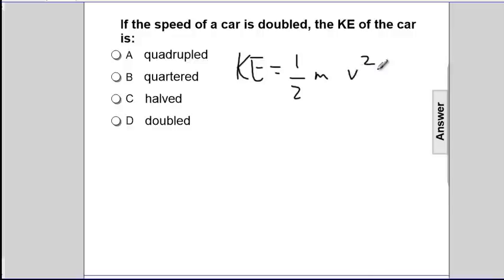So since v and ke are both in the denominator, as v goes up, ke will go up. So if you're doubling the speed, you're driving faster. So it can't quarter because that would go down. It can't half because that would be going down. The question is, does it double or quadruple?